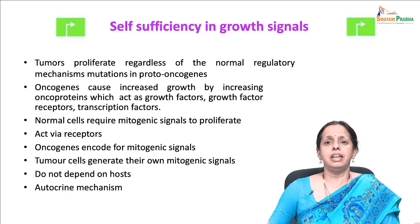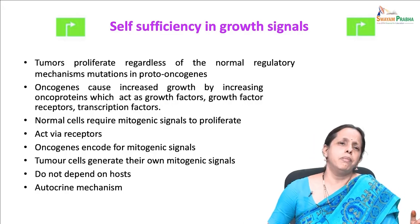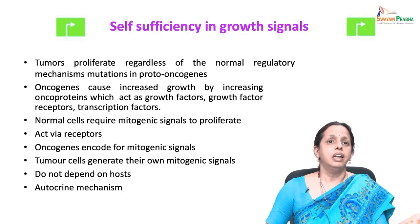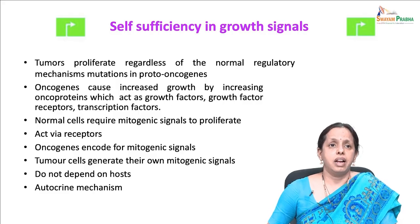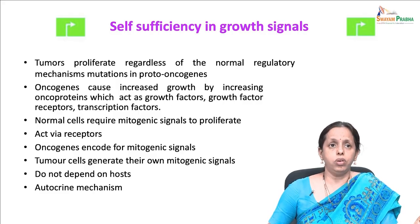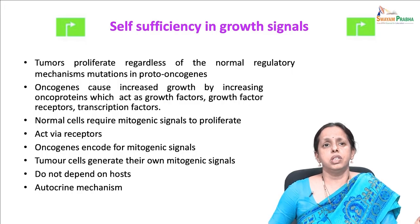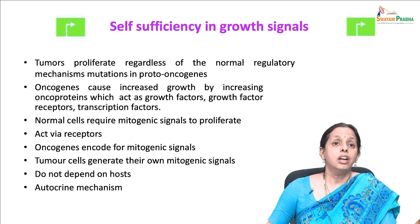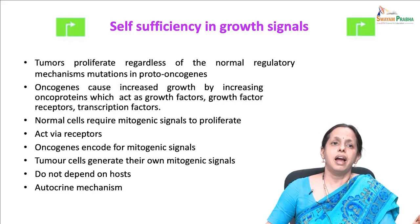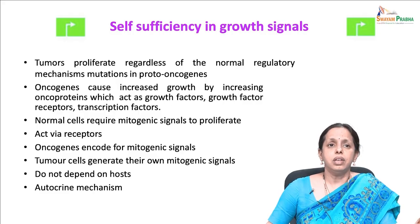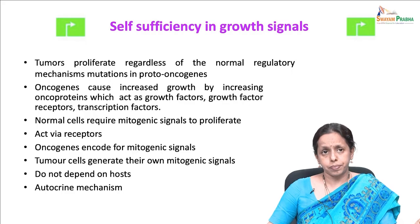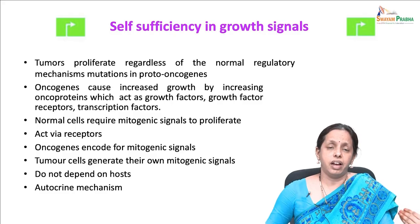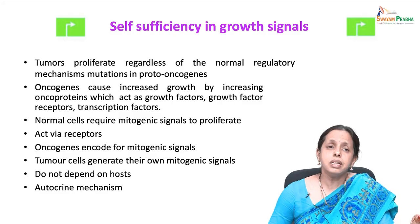Cancer cells, by deregulating their signals, try to become the masters of their own fate — they proliferate regardless of normal regulatory mechanisms. These oncogenes, by converting proto-oncogenes to oncogenes, cause increased growth by increasing oncoproteins which act as growth factors, growth factor receptors, and transcription factors. These are very important proteins; even in diagnostics, we look for these markers.